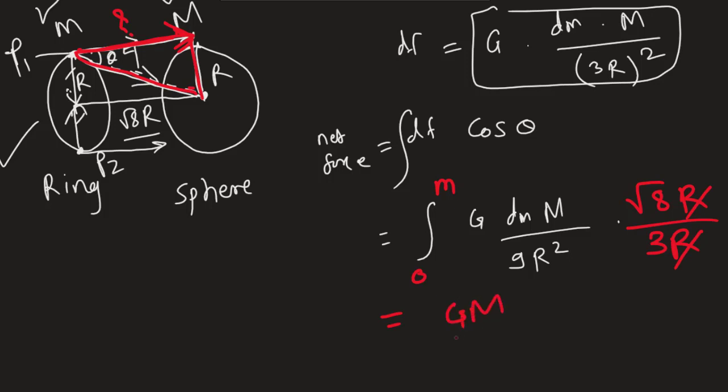We can take GM divided by 27r square outside, and up there will be square root of 8, and integration from 0 to m dm.